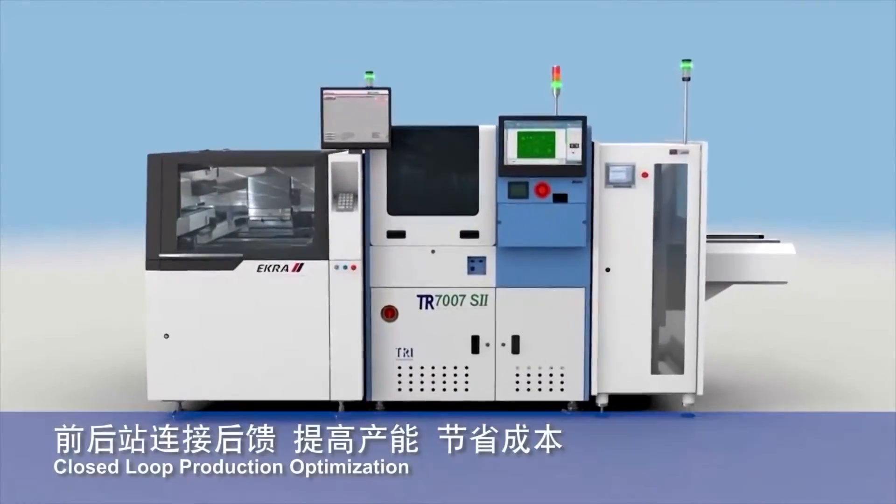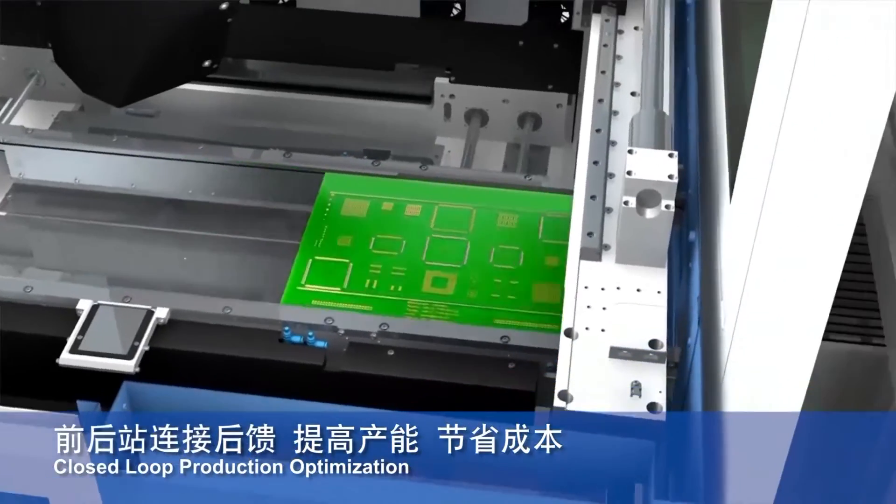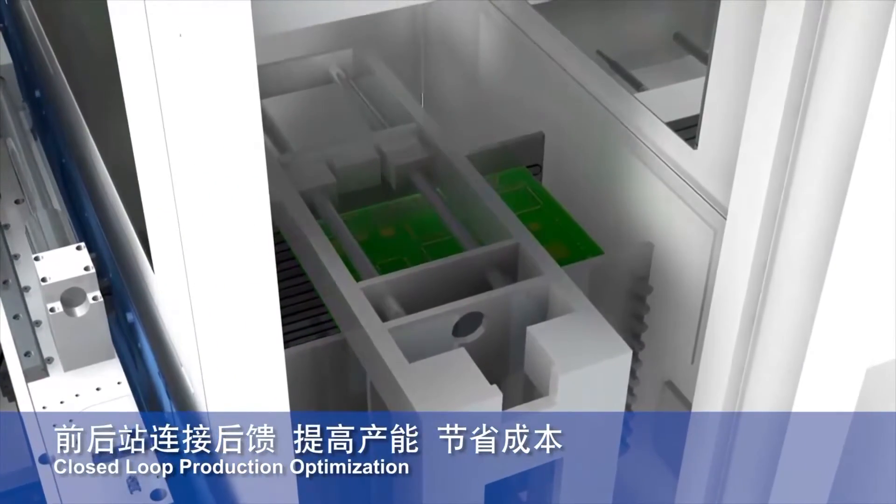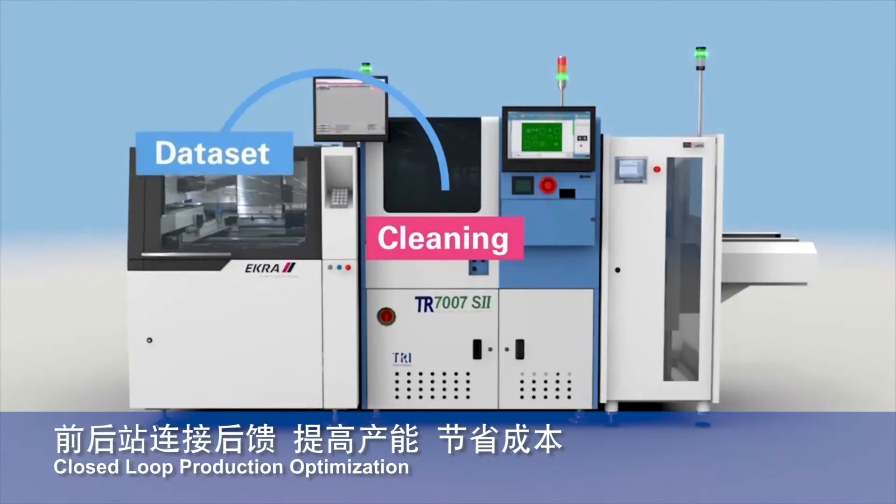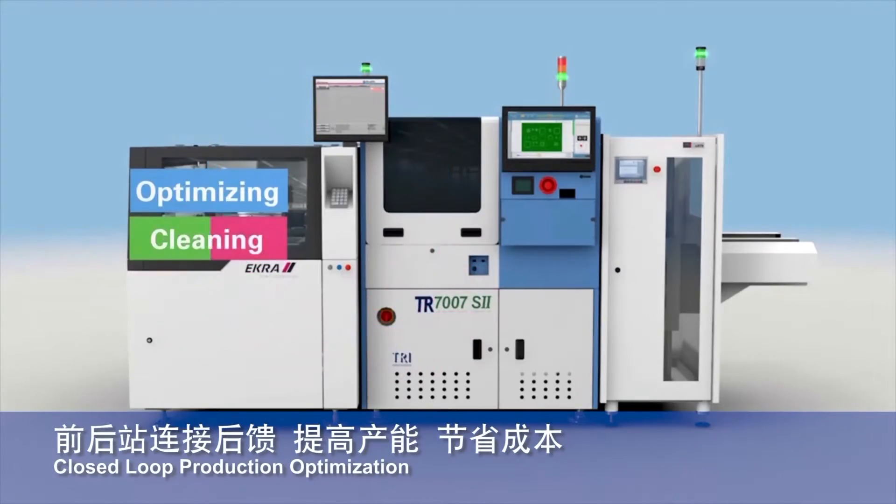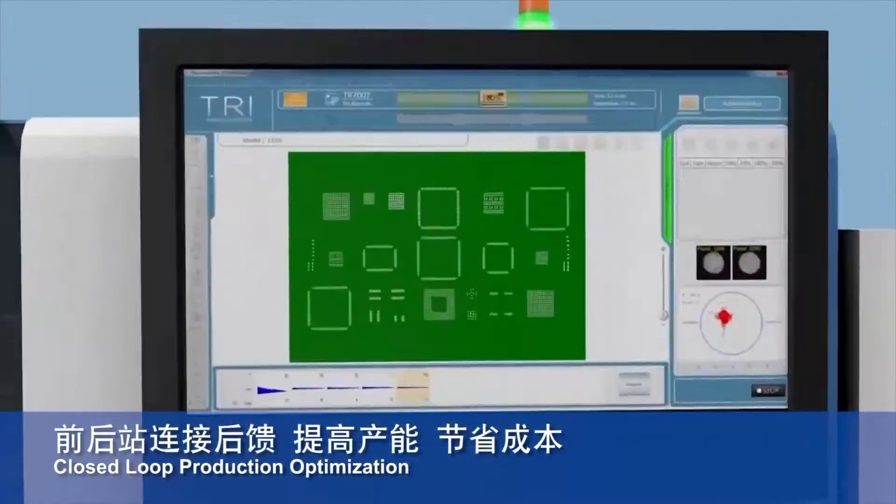SPI can also be connected to solder paste printers and pick and place equipment via the closed loop function to provide inspection data and optimize SMT manufacturing efficiency and quality.